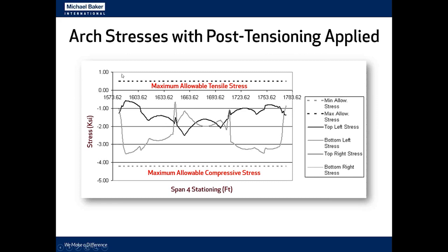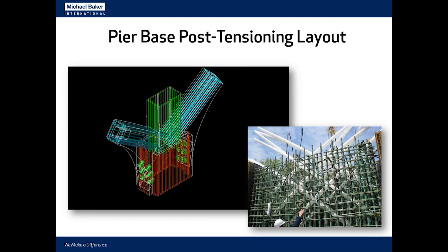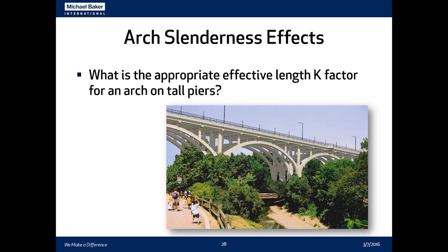With this post-tensioning in place, stresses that were previously significantly above the maximum allowable tensile stress per AASHTO are now all compressive and well within AASHTO service limit state stress limits for a precast concrete structure. The post-tensioning crosses over and overlaps in the pier base — the most complex part of the structure to build — but having the ducts cross over made the post-tensioning operations easier since there was plenty of room to access and jack the tendons without obstruction.